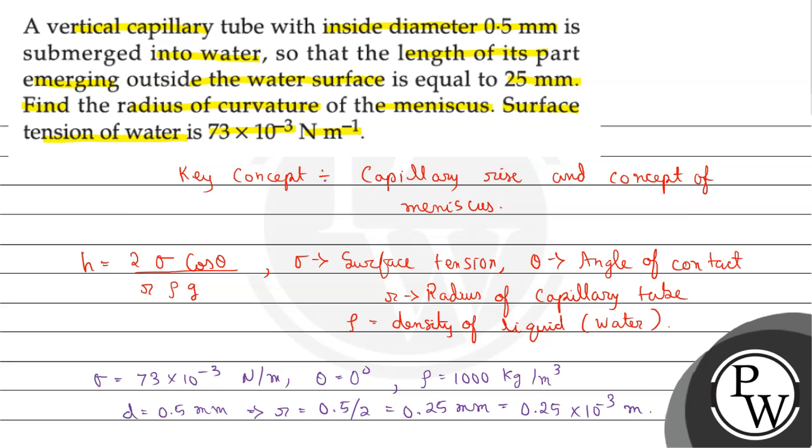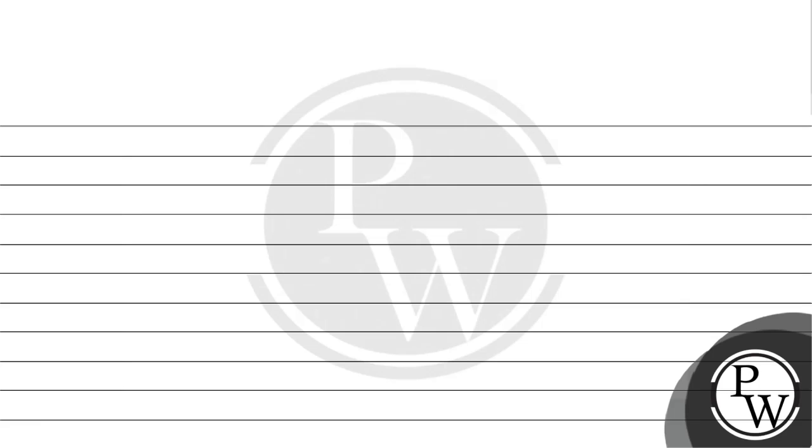Now we will put the values in the formula. Height h equals 2 multiplied by 73 multiplied by 10 to the power minus 3 multiplied by cos 0 degree, divided by 0.25 multiplied by 10 to the power minus 3 multiplied by 1000 multiplied by 9.8. After solving, we get height h equals 59 multiplied by 10 to the power minus 3 meter, which equals 59 mm.